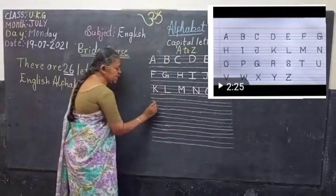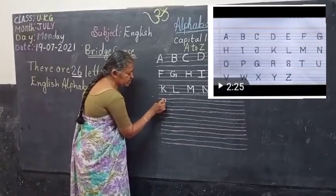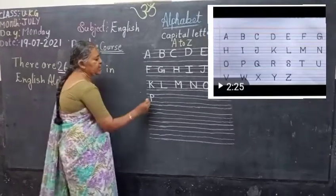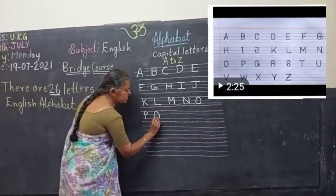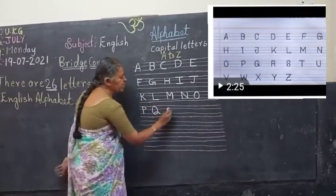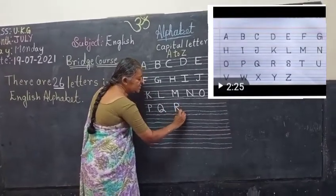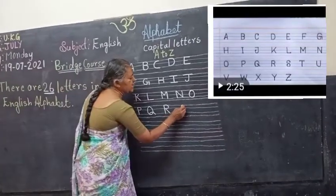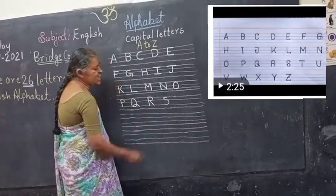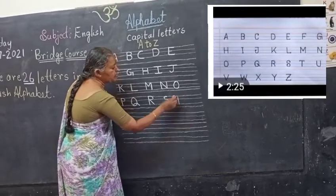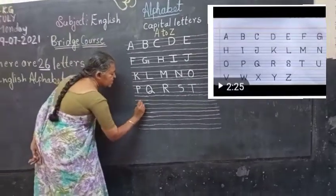Children, that is O — you have to touch all three lines. Next: strike line and curve — that is P. Next: write like O and make a small tail — that is Q. Next: strike line, curved line and the sliding line — that is R.